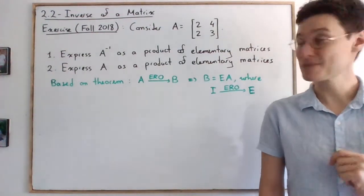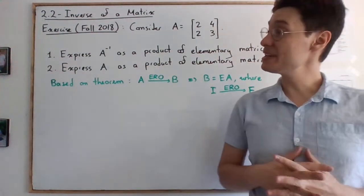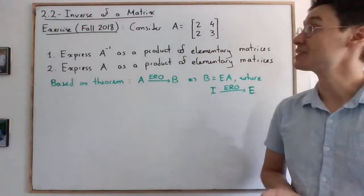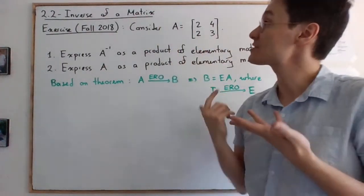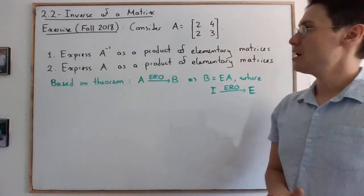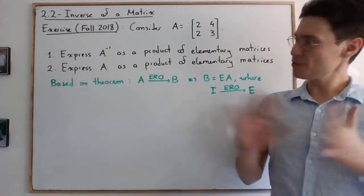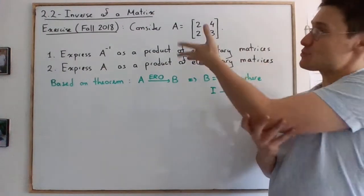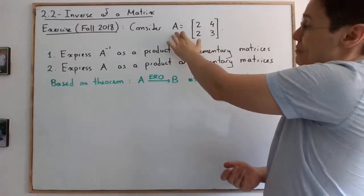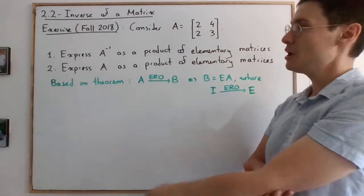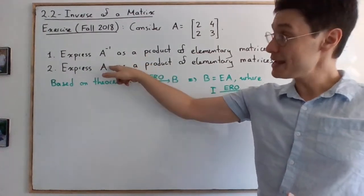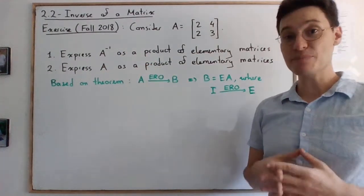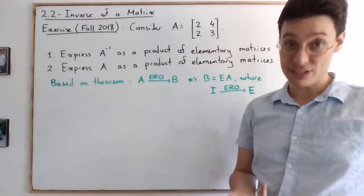Hi, linear algebra students. This is one of the exercises at the end of the section on inverse of a matrix. First of all, let's read the exercise together. We have a matrix A, which is a 2 by 2, and we want to express both A and its inverse as a product of elementary matrices.